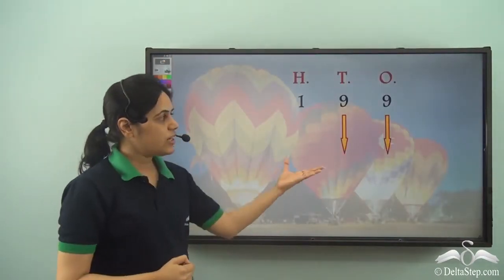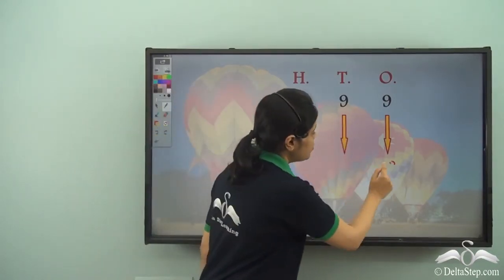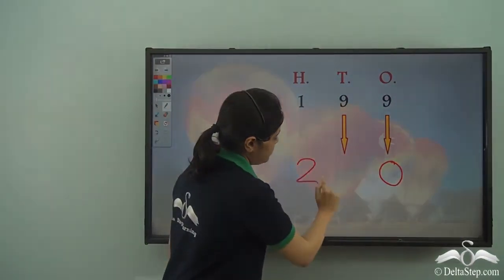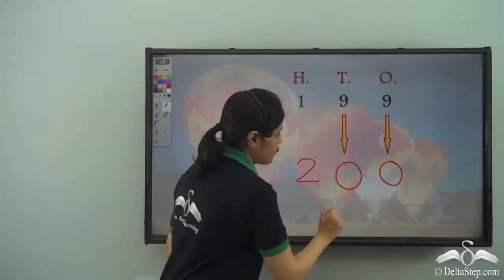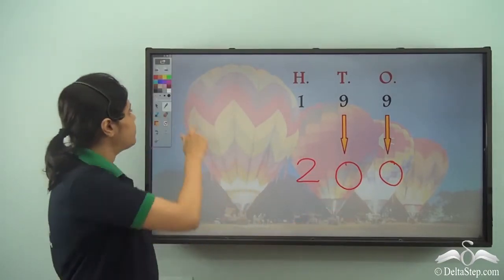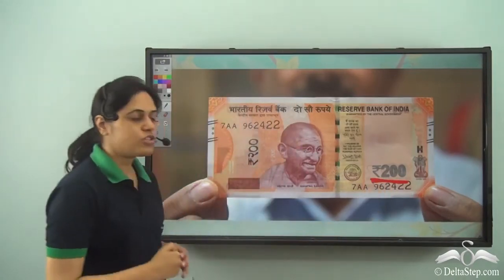Now what comes after 199? So for 9 to become 0, 19 should become 20. So 200 and this was the number that was written on the currency note. 200.